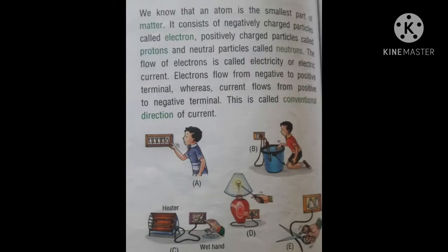Matter means anything that has mass and occupies space. The smallest part of matter is the atom. An atom consists of negatively charged particles called electrons, positively charged particles called protons, and neutral particles called neutrons. These are subatomic particles present inside an atom.